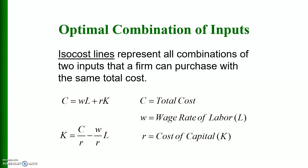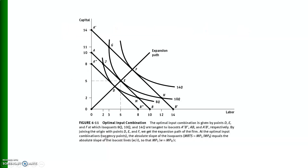The isocost line represents all combinations of labor and capital that a firm can purchase with the same total cost — similar to the budget line in consumer theory. The isocost equation includes the wage rate W, the amount of labor L, the rate of interest R, and the amount of capital K. Solving for K gives an intercept of C divided by R and a slope of W divided by R — the price ratio of the two inputs.